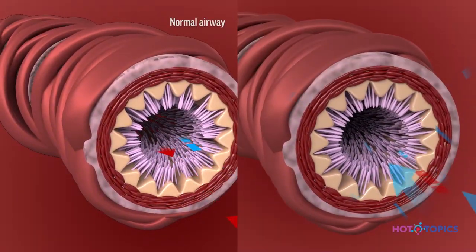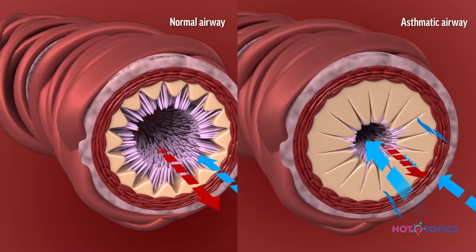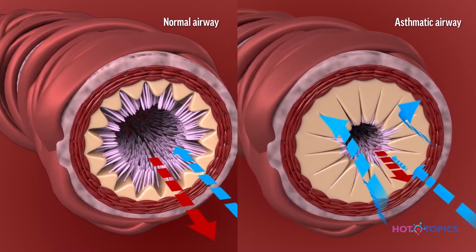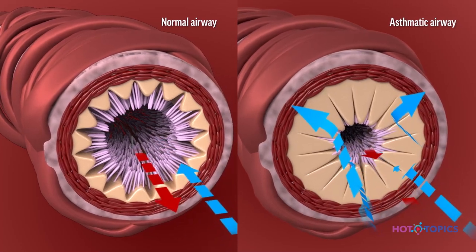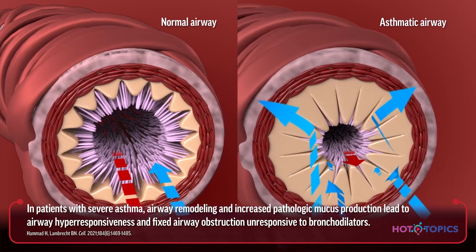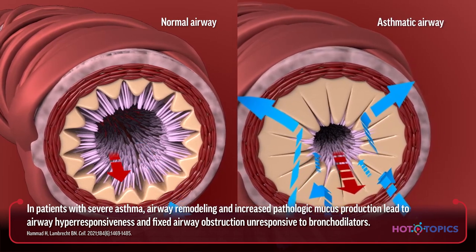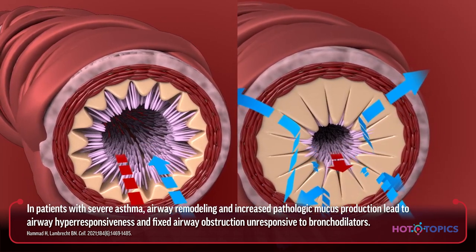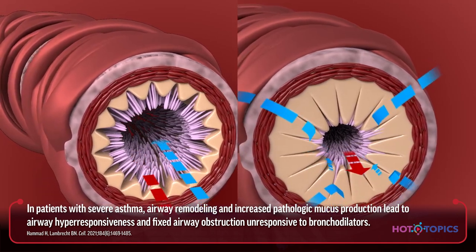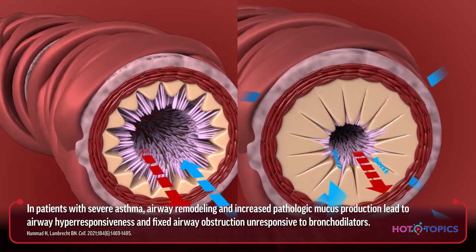Airway inflammation in asthma is characterized by the infiltration and activation of immune cells that interact with neighboring structural cells, including epithelium and smooth muscle cells. In patients with severe asthma, airway remodeling and increased pathologic mucus production lead to airway hyperresponsiveness and fixed airway obstruction unresponsive to bronchodilators.